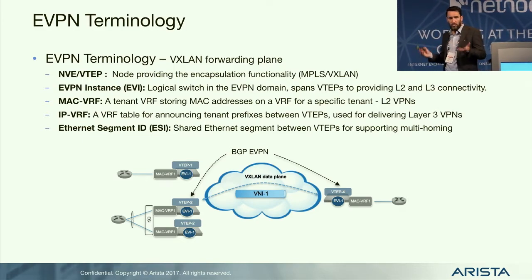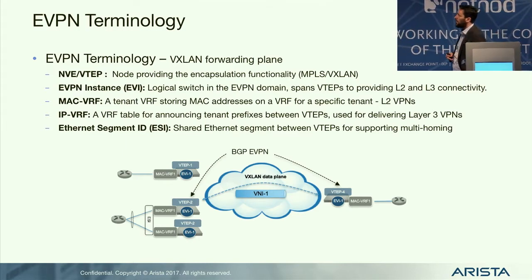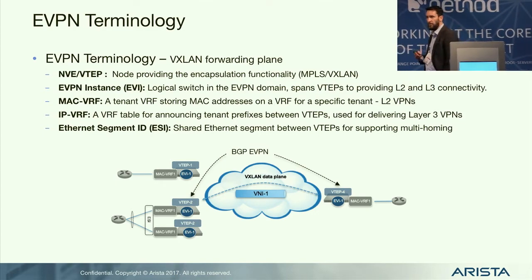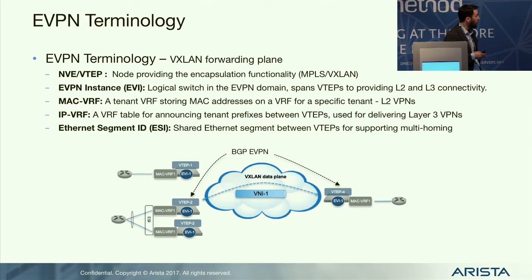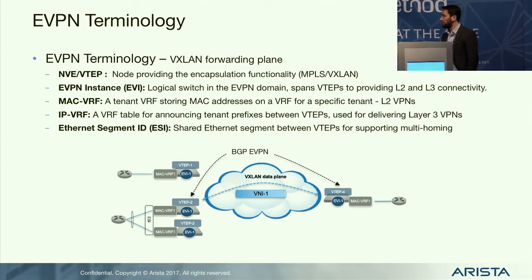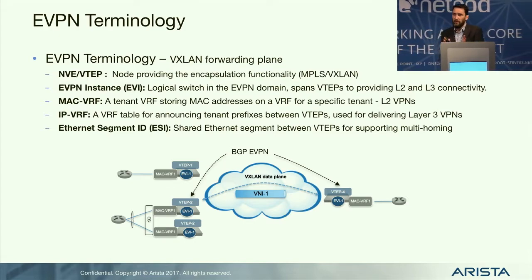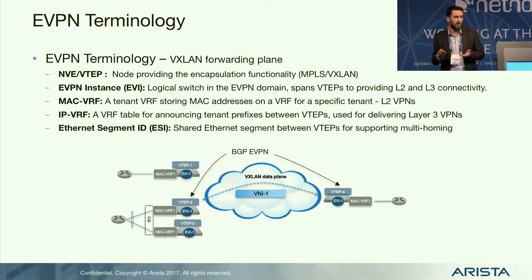Your EVPN instance is your layer 2 domain — the logical switch you build across multiple VTAPs. A key value of EVPN is that you can define a MAC VRF to build layer 2 VPNs, and an IP VRF to define layer 3 VPNs. EVPN also supports dual homing: two VTAPs can act as one logical VTAP for a downstream device connected via a standard LAG, sharing what's called an ESI — an Ethernet Segment Identifier.